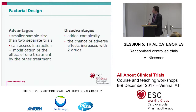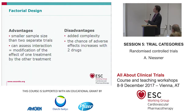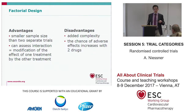The advantages of factorial design: you need a smaller sample size than two separate trials, and it can assess interaction — modification of the effect of one treatment by the other. This is also interesting for AUGUSTUS, where there may be interaction between the two treatment variations. The disadvantage is added complexity and an increased chance of adverse effects with two new drugs.